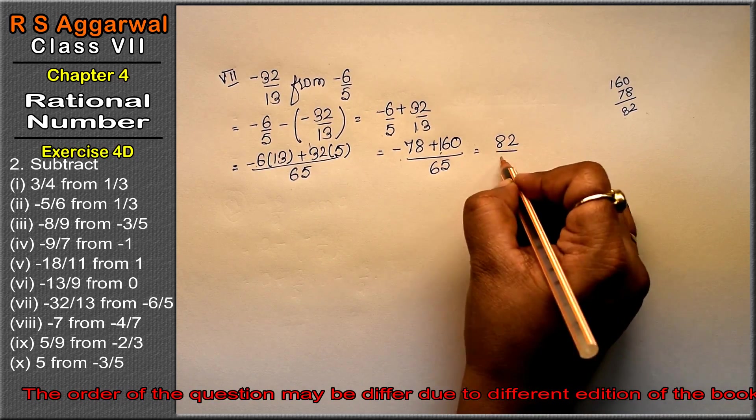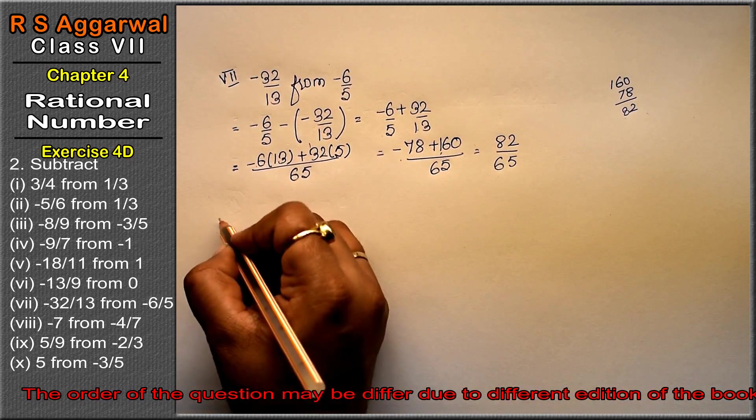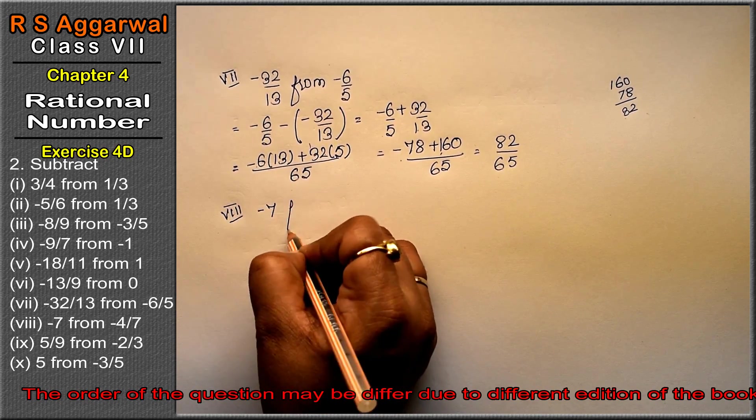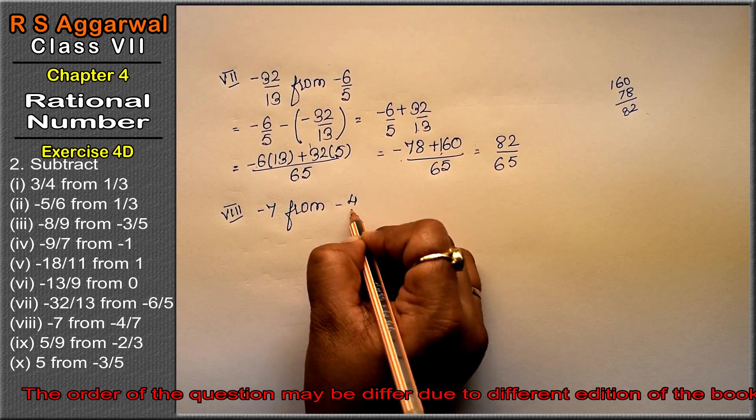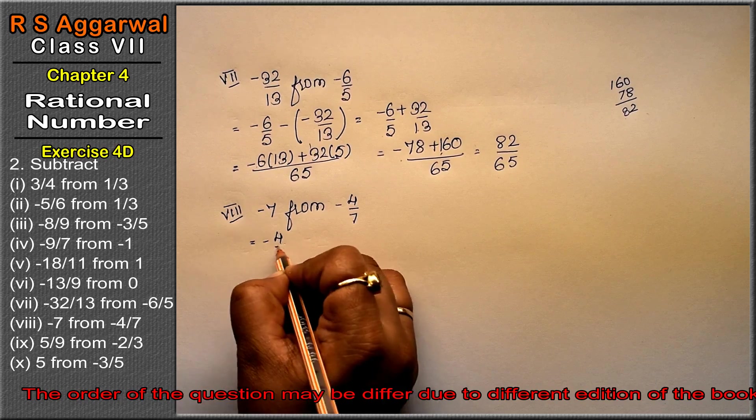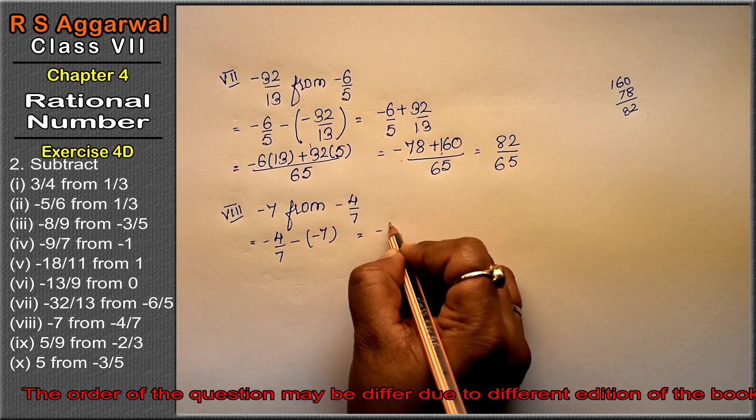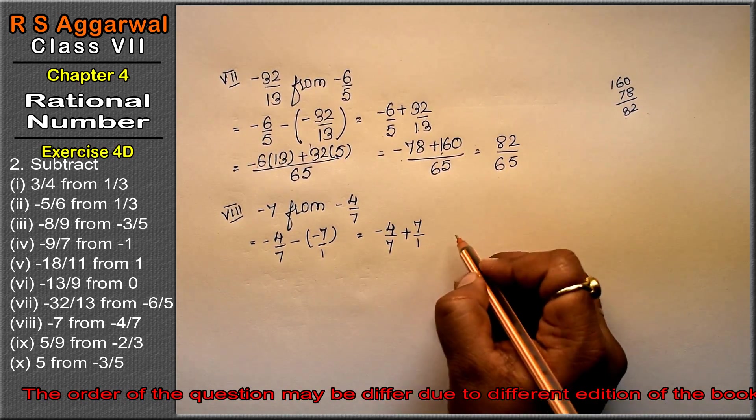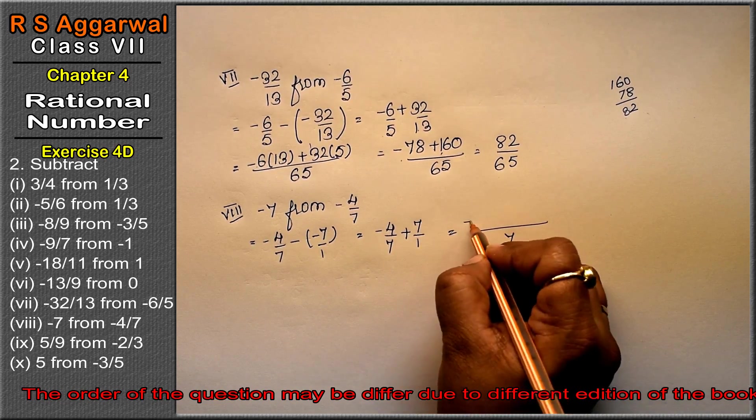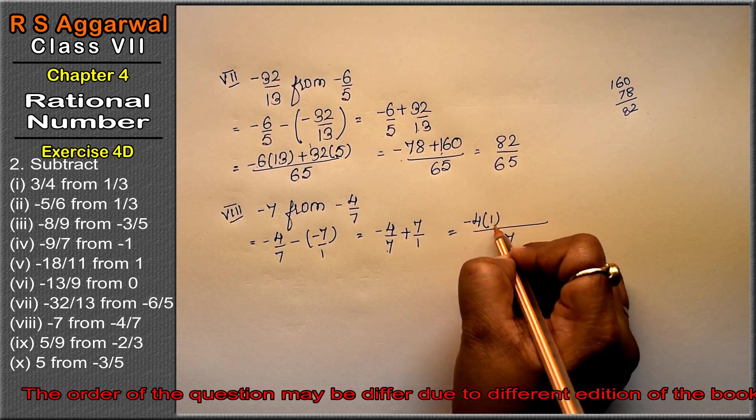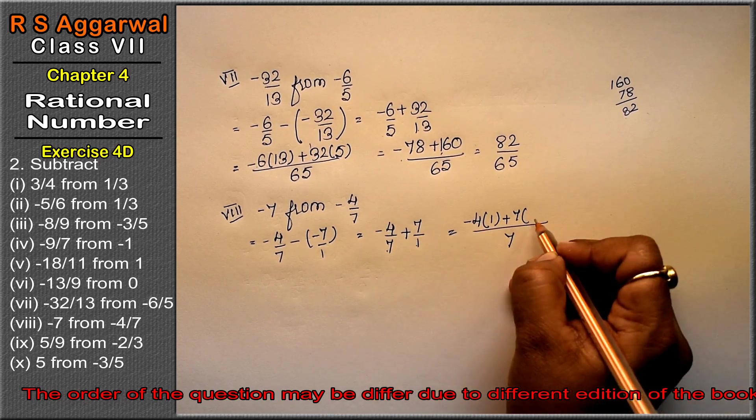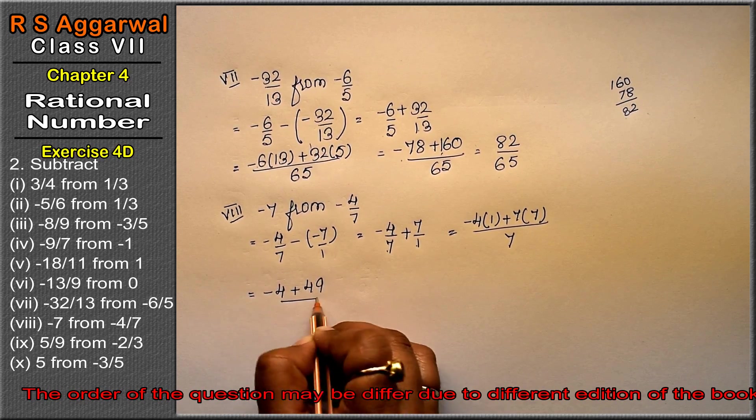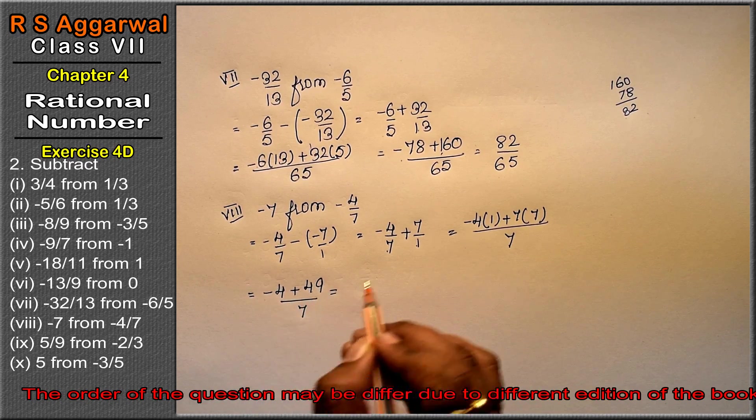Eighth part: subtract minus 7 from minus 4 upon 7. So minus 4 upon 7 minus minus 7. This equals minus 4 upon 7 plus 7 upon 1. LCM is 7. Minus 4 plus 49 upon 7. Both opposite signs, subtract: 45 upon 7 is the answer.